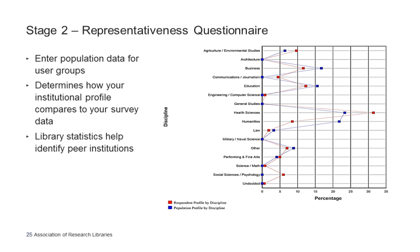In your results report, ARL provides an analysis of how well your respondent sample represents your overall campus population. We ask that you fill out a representativeness questionnaire, providing population data for your user groups and discipline areas. The representativeness questionnaire becomes available in Stage 2 and is based on the customizations you made in Stage 1. A representativeness chart shows the population in each discipline area as a percentage of the overall campus population alongside the number of respondents in each discipline as a percentage of the total respondent sample, indicating how representative your respondents are.